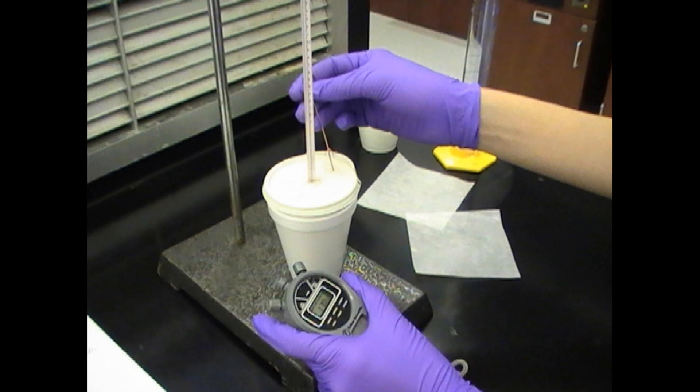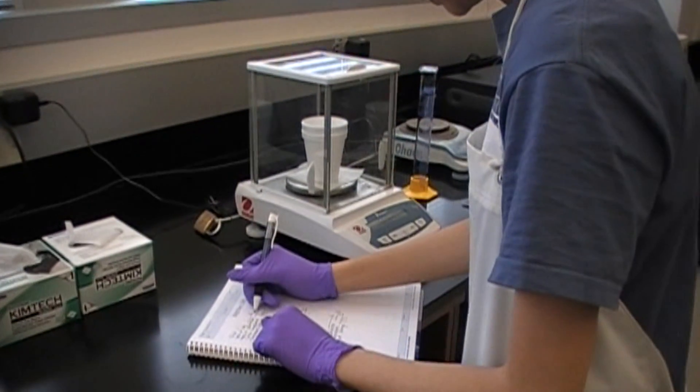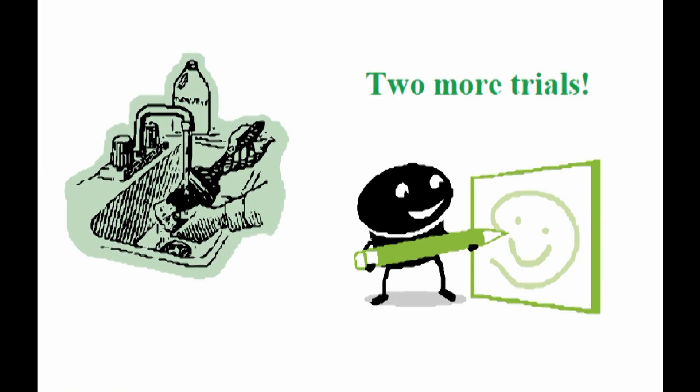Once the reaction is completely finished, remove the lid, stirrer, and thermometer, and record the weight of your dry calorimeter with the solution at the balance station. Now thoroughly clean your calorimeter, and conduct your next two trials.